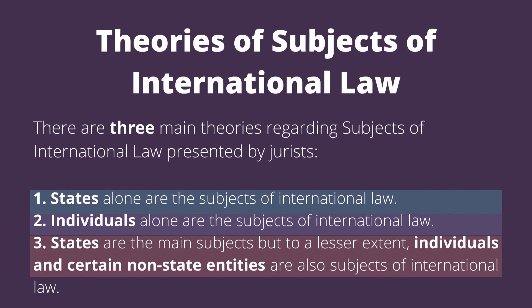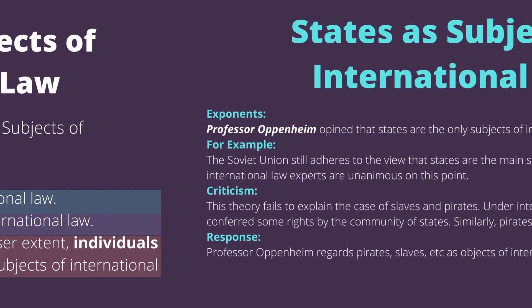There are three main theories regarding subjects of international law presented by jurists. First, states alone are the subjects of international law. Second, individuals alone are the subjects of international law. And third, states are the main subjects, but to a lesser extent, individuals and certain non-state entities are also subjects of international law.